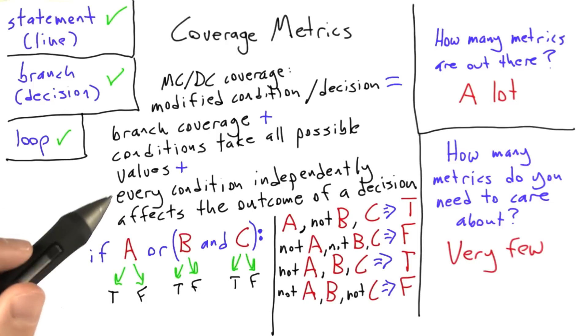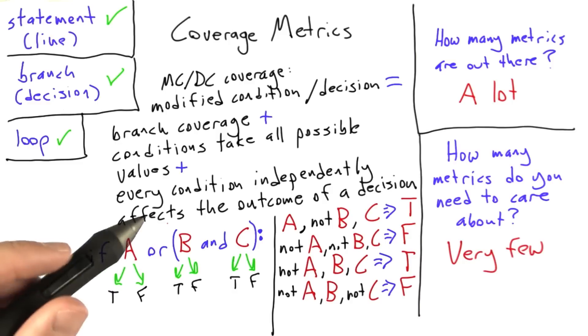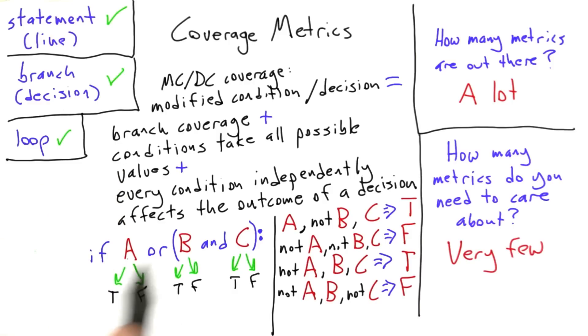And it turns out that the domain of interest for MCDC coverage, that is to say embedded control systems that happen to be embedded in avionics systems, end up having generally lots of complicated conditionals. It's definitely desirable when people's lives depend on the correctness of these complicated conditional expressions to force people to test them rather thoroughly. The other idea behind MCDC coverage is that as part of establishing that every condition independently affects the outcome of a decision, we're going to figure out when we have conditionals that don't independently affect the outcome of a decision.